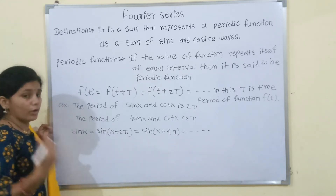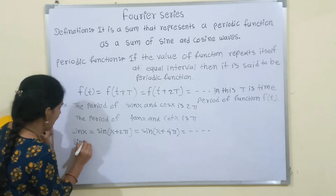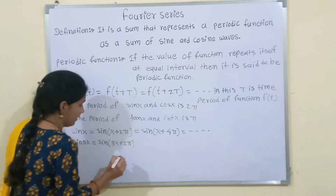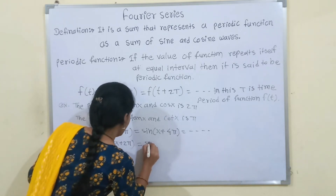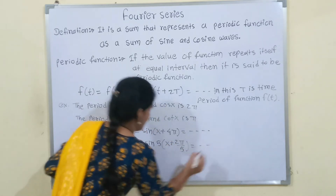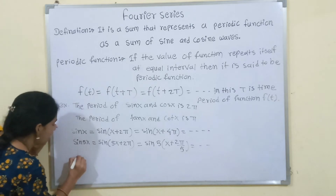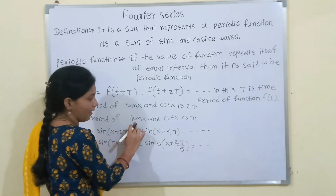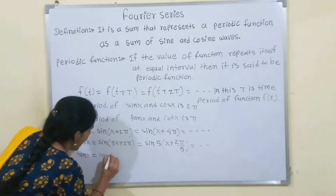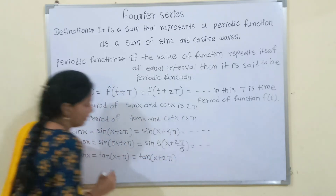If we have any coefficient of x — for example sin 5x — we can write sin 5x = sin(5x + 2π) = sin(5(x + 2π/5)). Here we have a new value of T, that is 2π/5. For tan x, the time period is π, so tan x = tan(x + π) = tan(x + 2π).